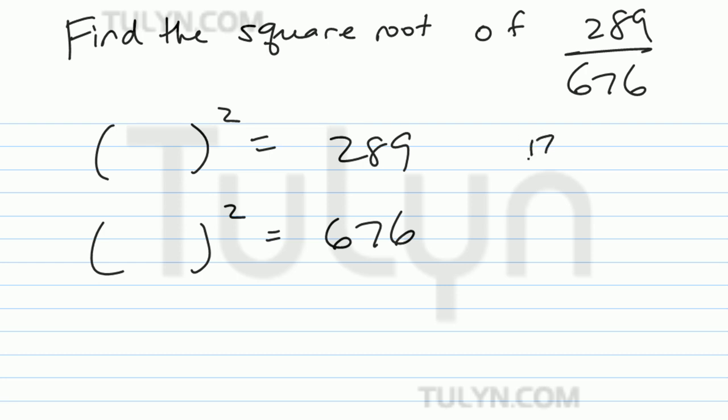Let's see, 17 times 17. 7 times 7 is 49. 1 times 7 is 7 plus 4 is 11. 7 times 1 is 7, 1 times 1 is 1, add 279. So 17 squared is 289.